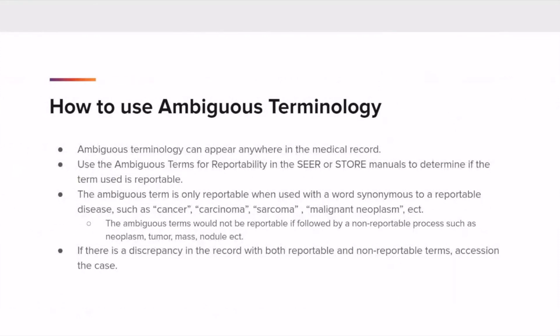Where does ambiguous terminology come from and how do we use it? Ambiguous terminology can appear anywhere in the medical record — this could be on imaging, physician statements, or pathology and cytology reports. When ambiguous terms are used, it's important to follow the reportability instructions and lists provided in both the SEER and STORE manuals.